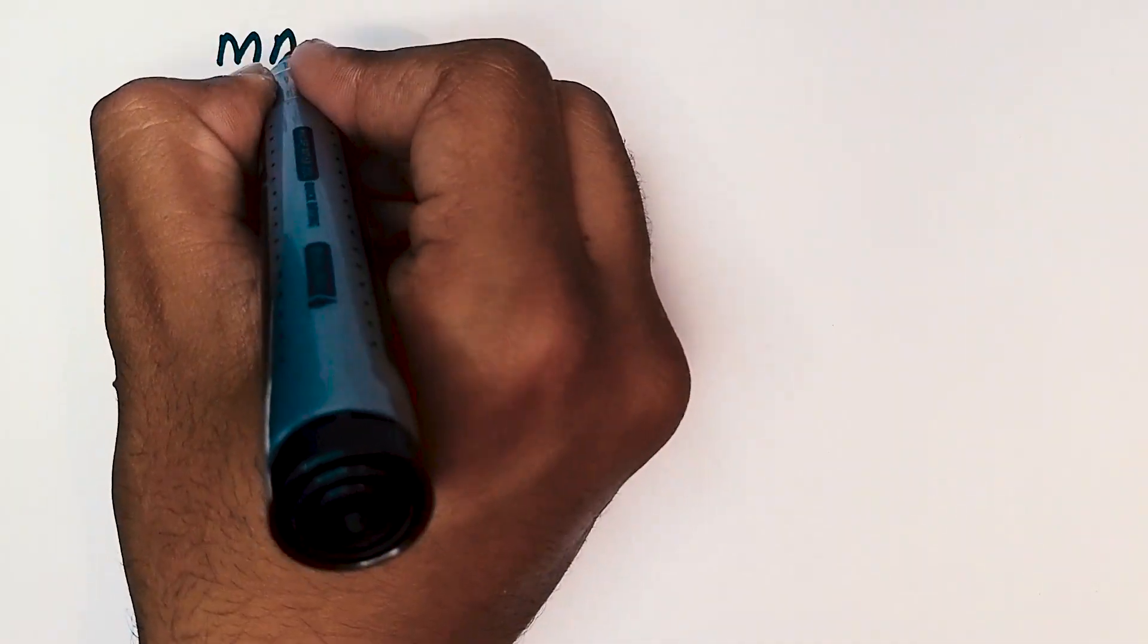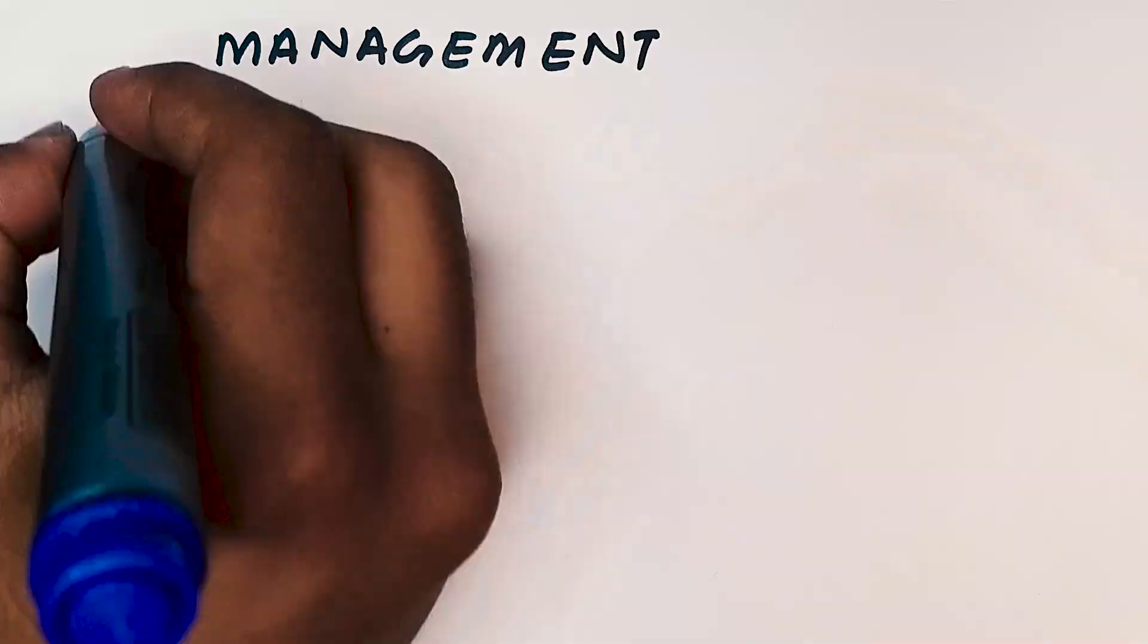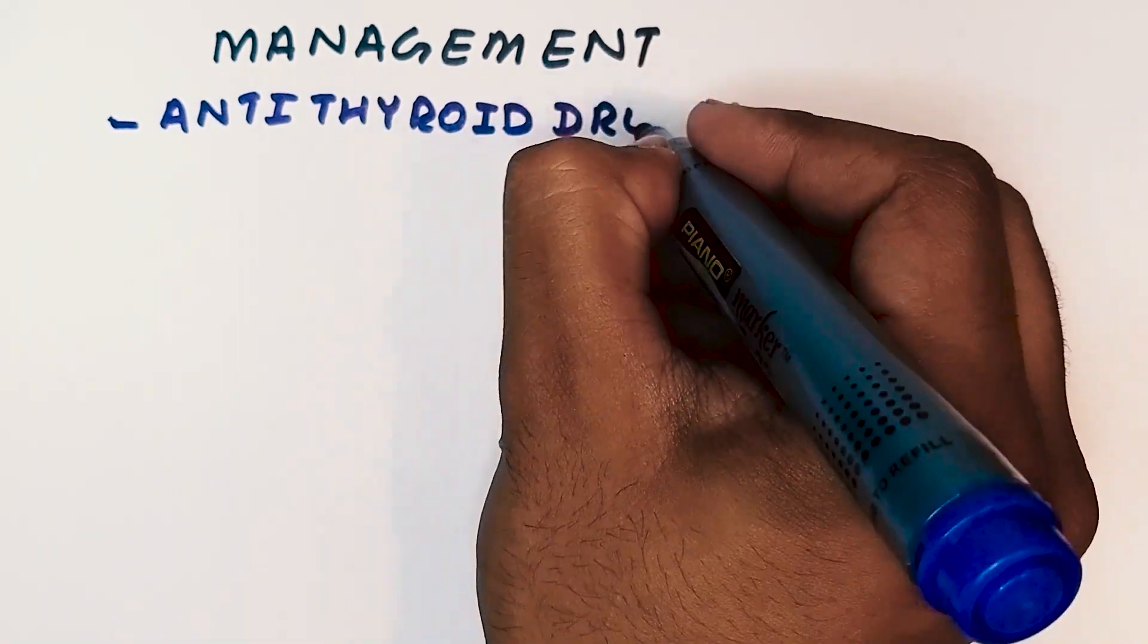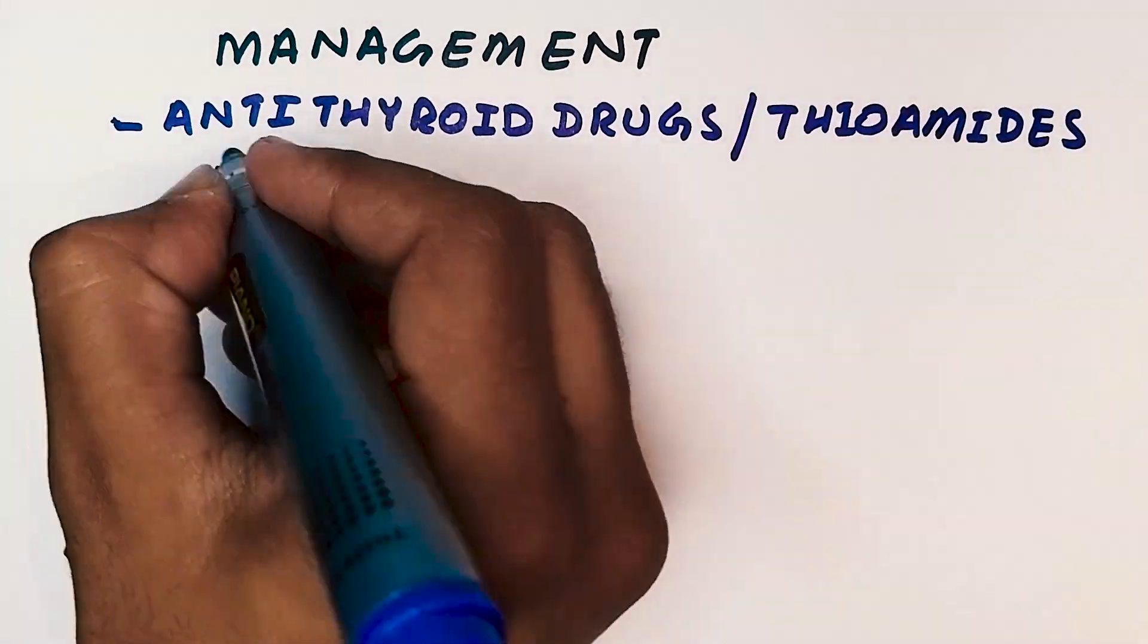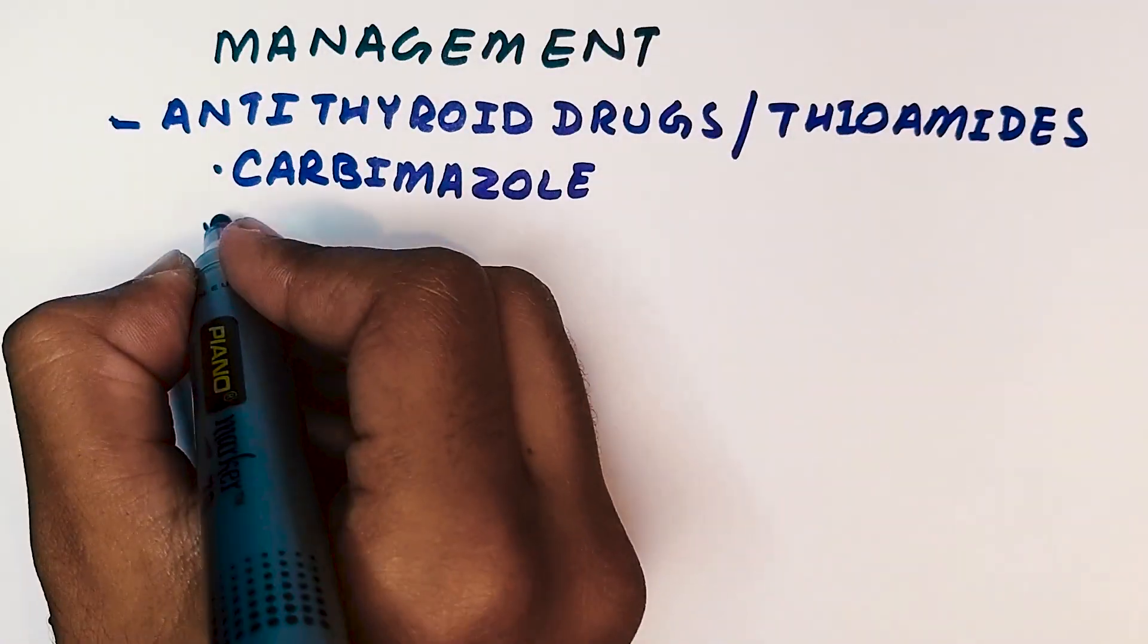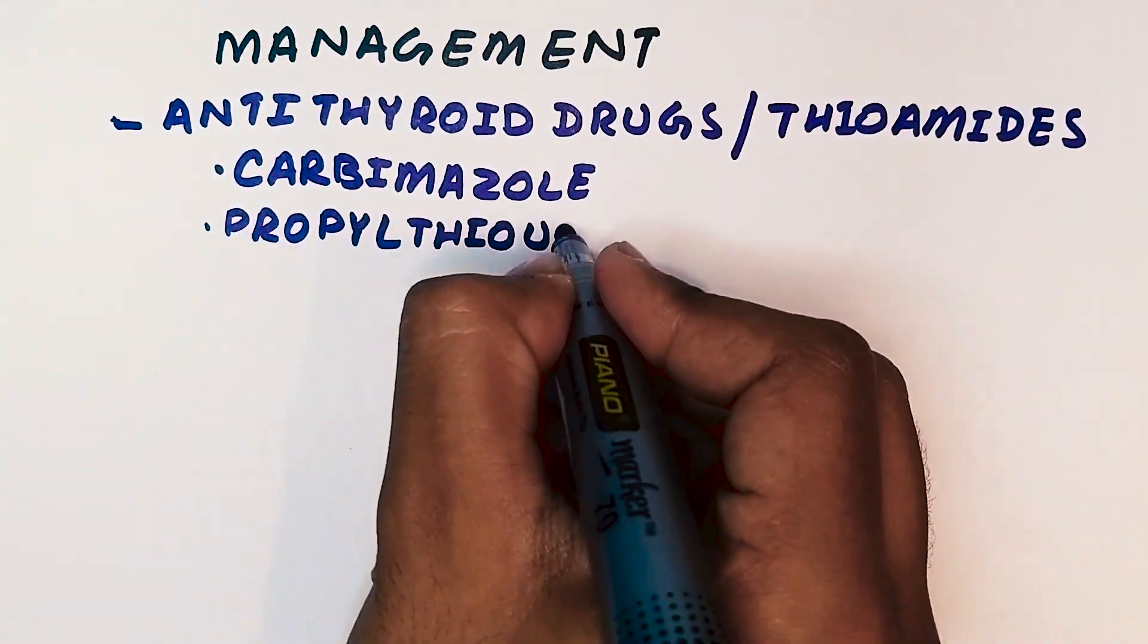Now, let's discuss the management of hyperthyroidism based on the NICE guidelines. The primary treatment approach involves the use of antithyroid drugs such as carbimazole or propylthiouracil, which inhibit the synthesis of thyroid hormones.